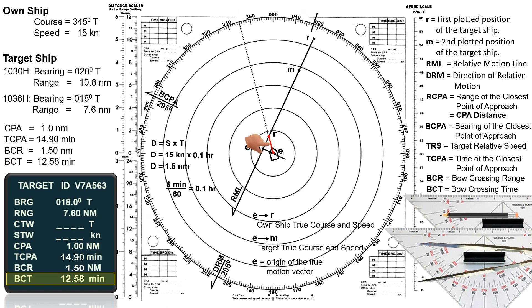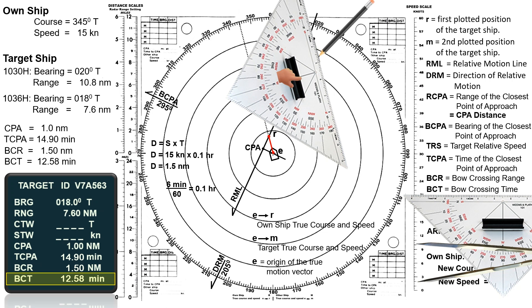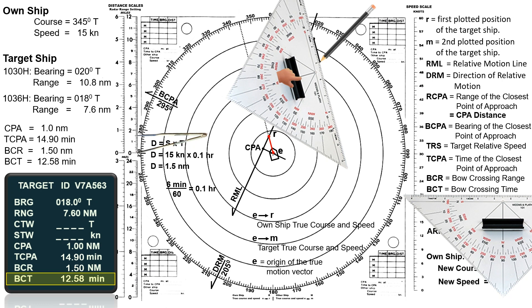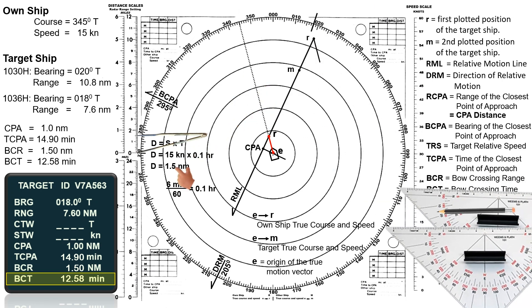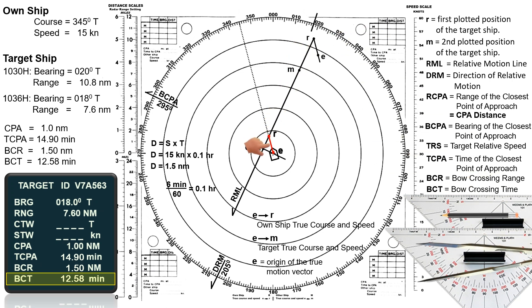Now we need to create a vector triangle to determine the target's true course and speed. To do that, we bring the own ship vector to the target's first plotted position. In your radar plotting sheet, bring own ship's course to point R and draw a line in a reciprocal direction. Then measure 1.5 miles from the 12-mile range scale and lay your compass divider down from point R along the drawn line. Mark this point as E.